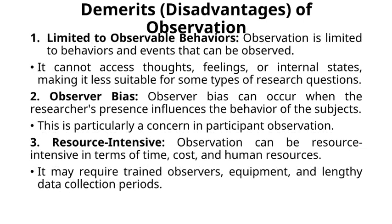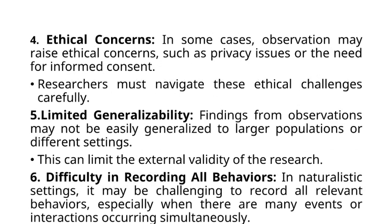Demerits and disadvantages of observation. First: limited to observable behaviors. Observation is limited to behaviors and events that can be observed. It cannot access thoughts, feelings, or internal states, making it less suitable for some types of research questions. Second: observer bias. Observer bias can occur when the researcher's presence influences the behavior of the subjects. This is particularly a concern in participant observation. Third: resource-intensive. Observation can be resource-intensive in terms of time, cost, and human resources. It may require trained observers, equipment, and lengthy data collection periods. Fourth: ethical concerns. In some cases, observation may raise ethical concerns, such as privacy issues or the need for informed consent. Researchers must navigate these ethical challenges carefully.